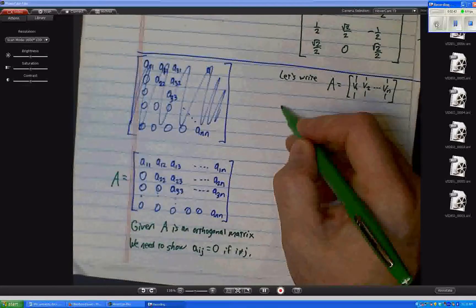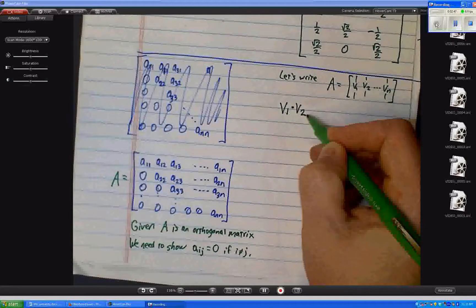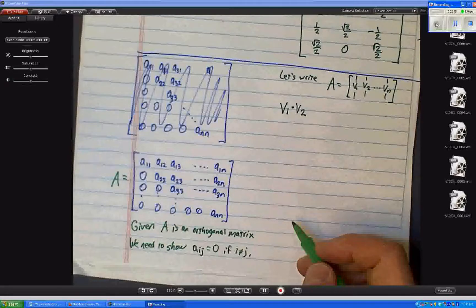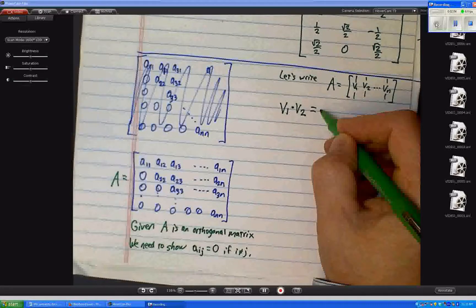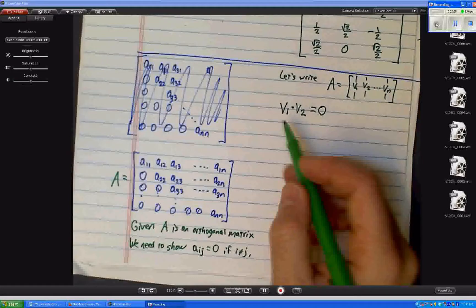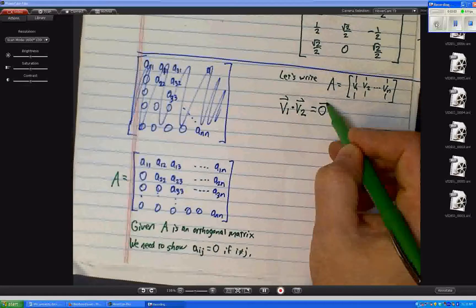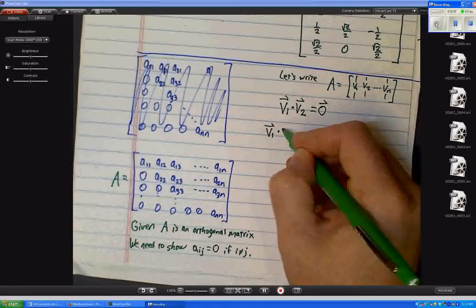What is V1 dot V2? Yeah, that's 0. Right. But for V1 dot, and these are vectors, right? When you do V1 dot V2,